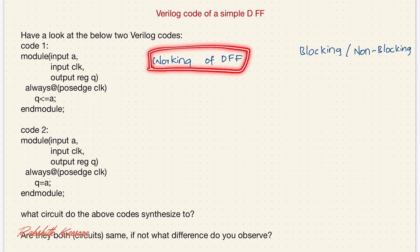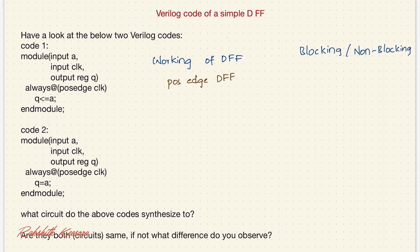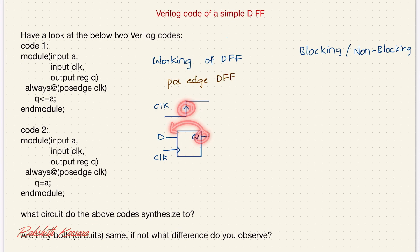Most of you know the working of a D flip-flop. If this is the clock, whenever there is a positive edge, the output q will be equal to d — in other words, it will be clocking the value d.